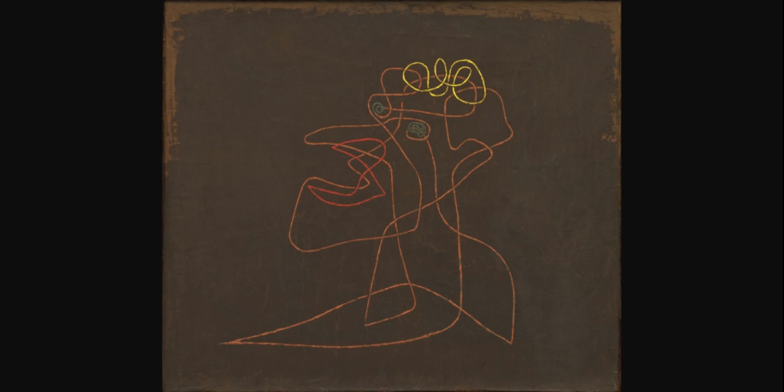Klee used what might be labeled a consistent line in his portrait. Notice that the line's thickness and value remain consistent all along its entire length, although it twists and curves in many directions.